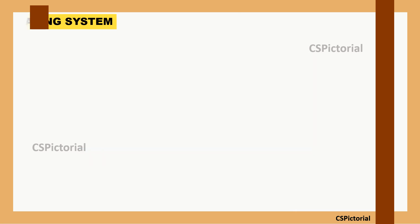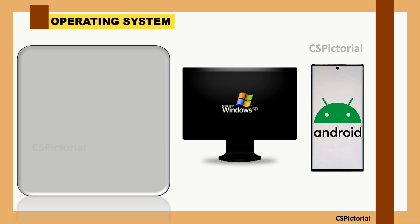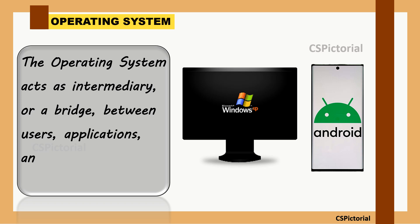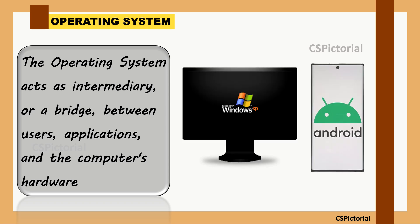An operating system is the most important software that runs on a computer. It manages the computer's memory and processes, and allows you to communicate with a computer without knowing how to speak the computer's language. Without an operating system, a computer is useless. The OS acts as an intermediary between users, applications, and the computer's hardware. Popular examples include Windows, Mac OS, Android, and iOS.